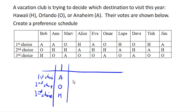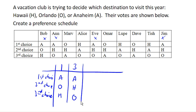Next is A-H-O, which is how Anne voted. We find three people who voted in the order A-H-O. Then O-H-A: we have three people who voted that way as well.